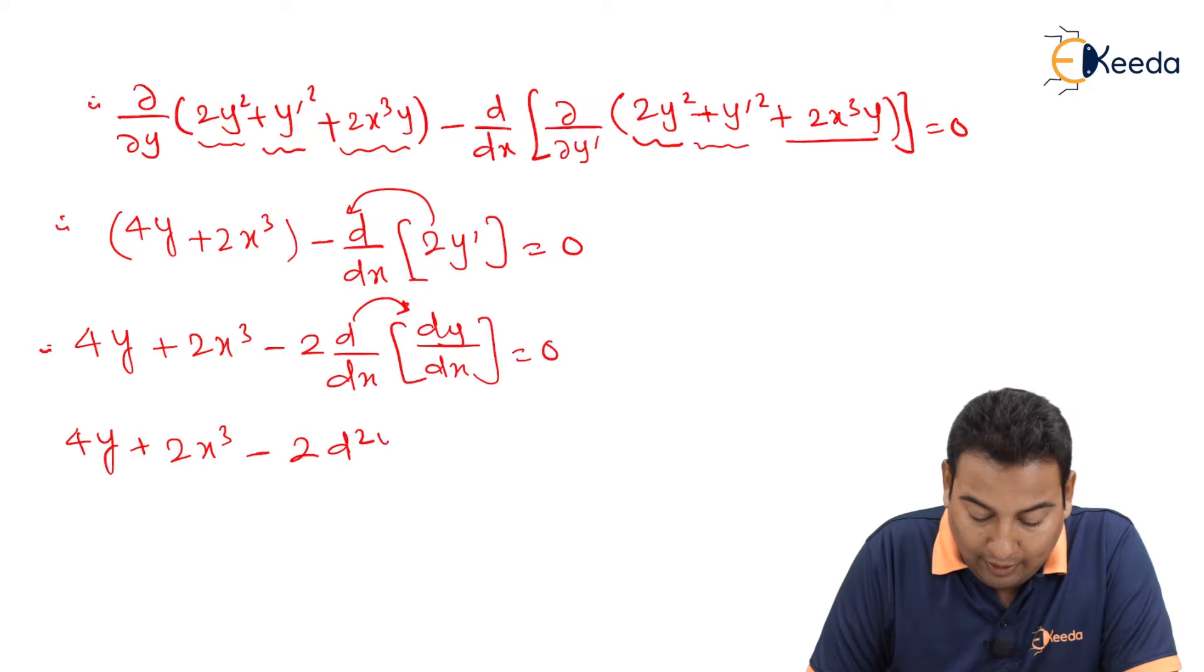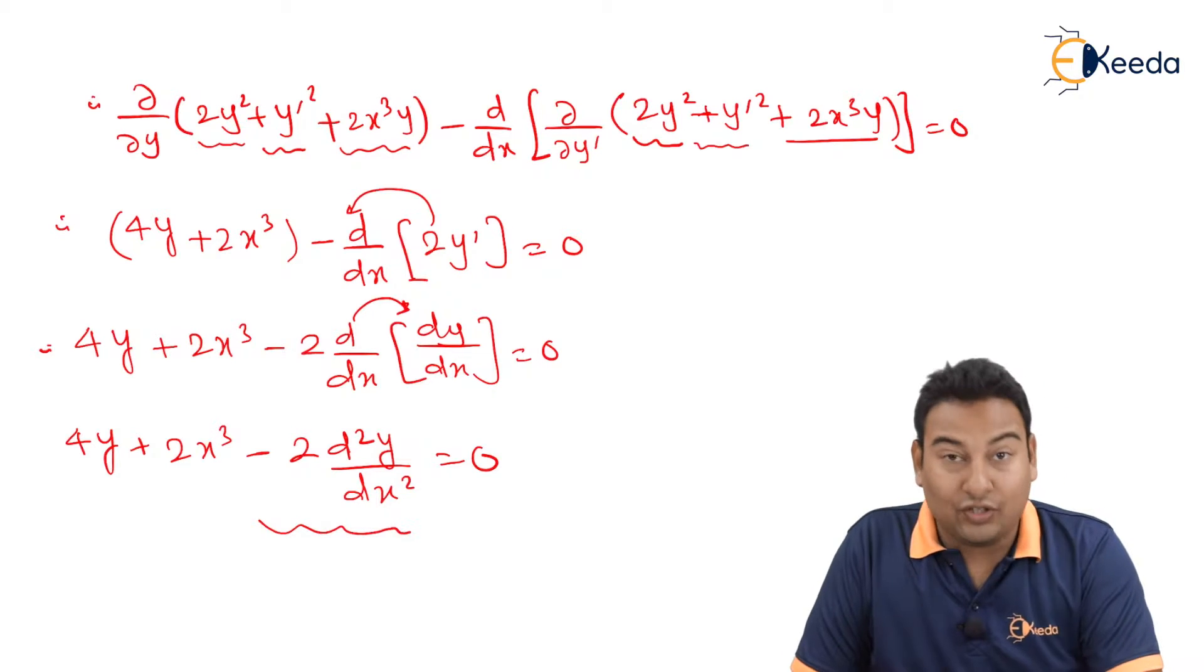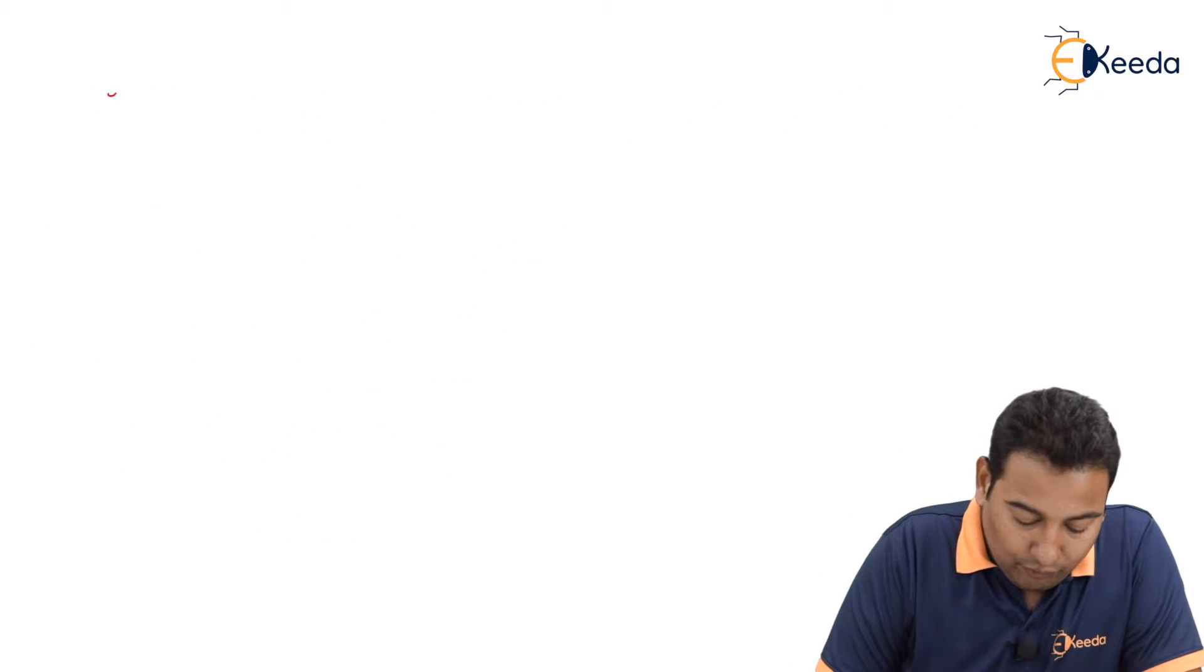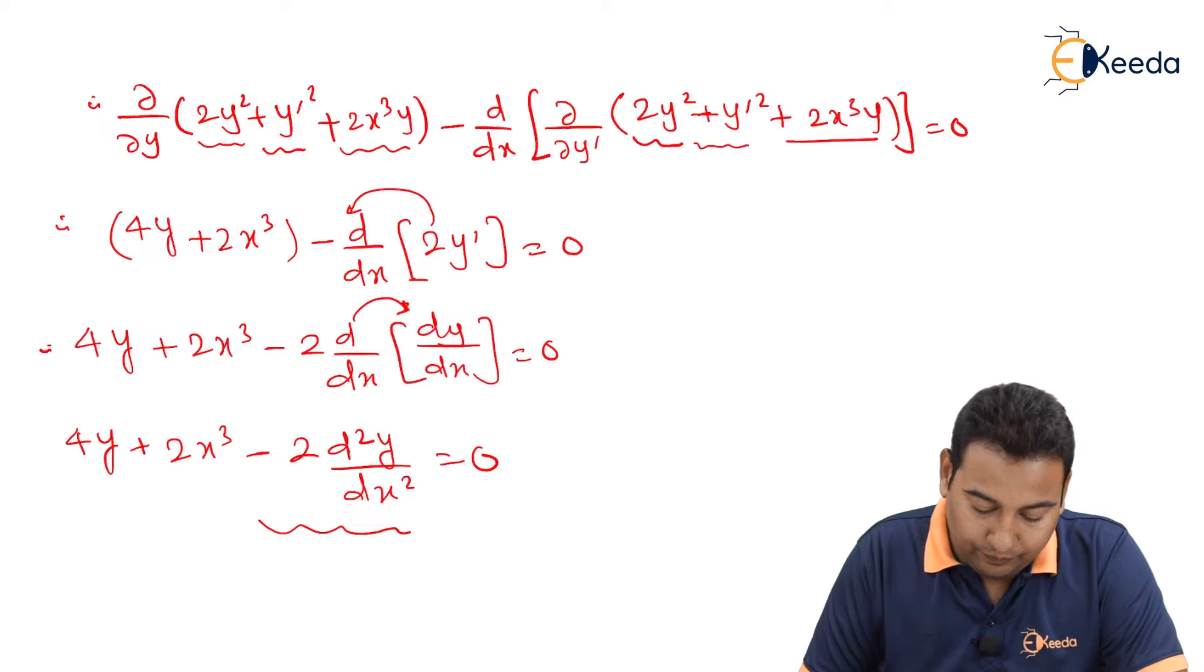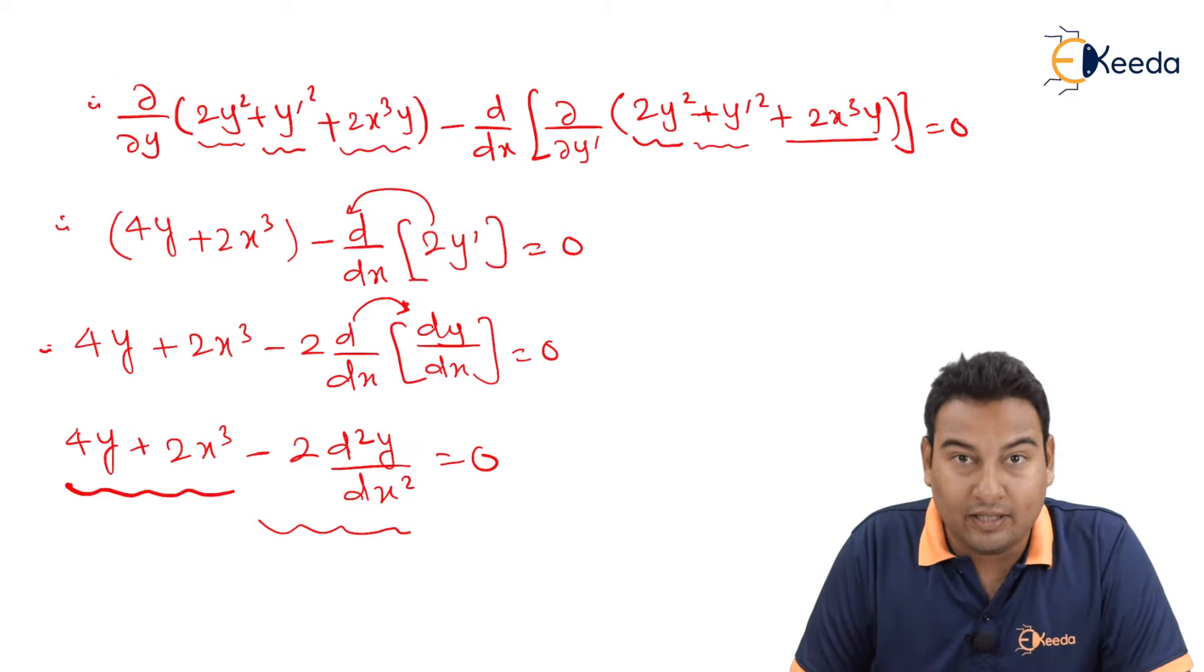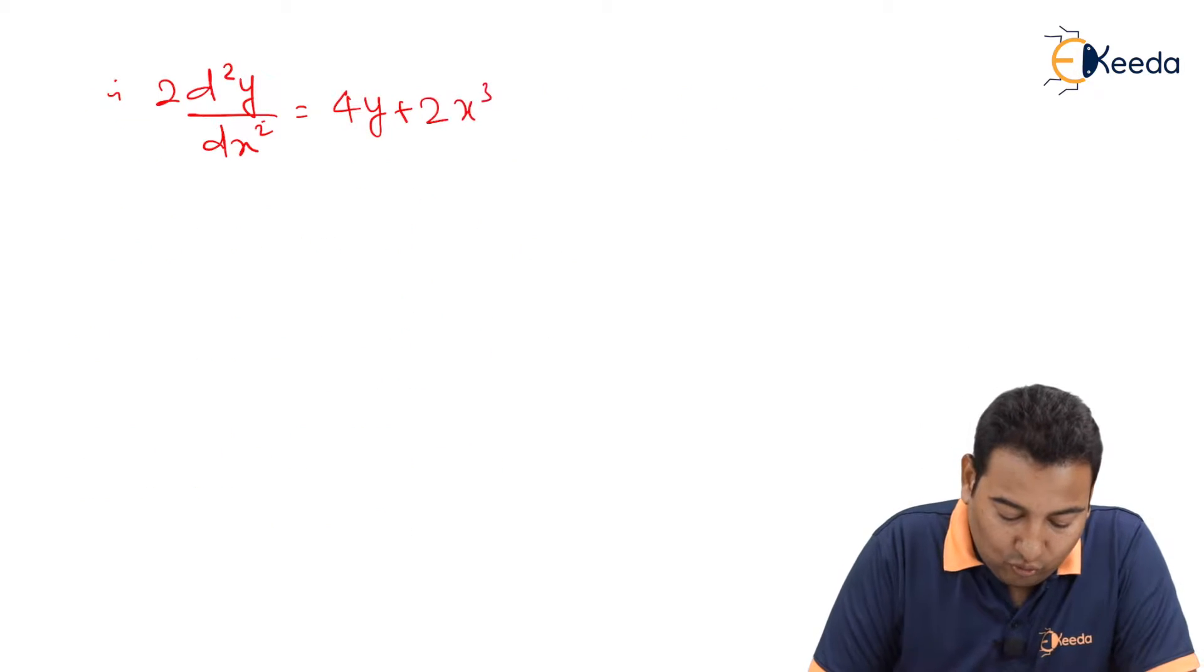Let's take this term on right-hand side. Therefore it will be 2d²y/dx² equal to these terms will remain as it is, 4y plus 2x cube.